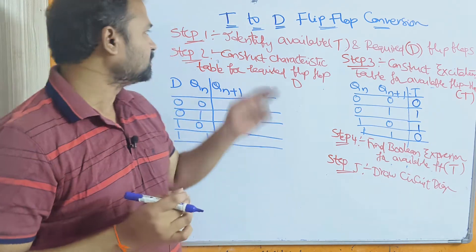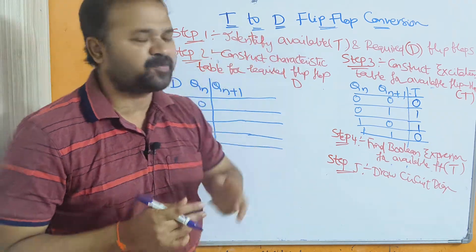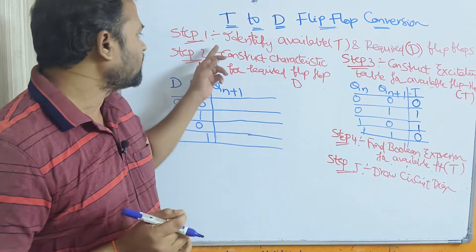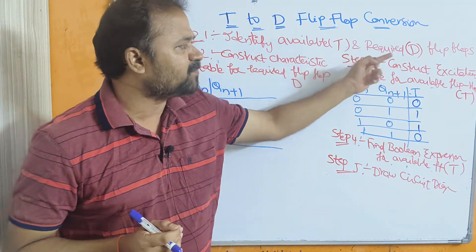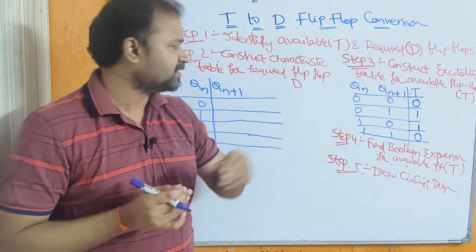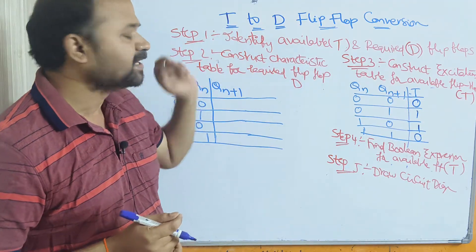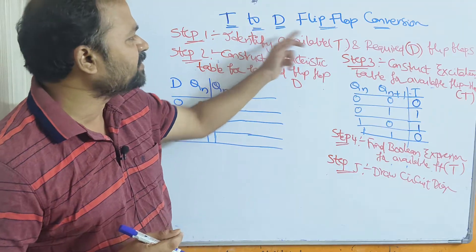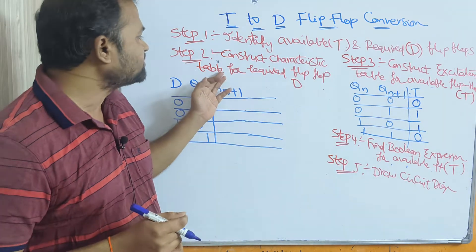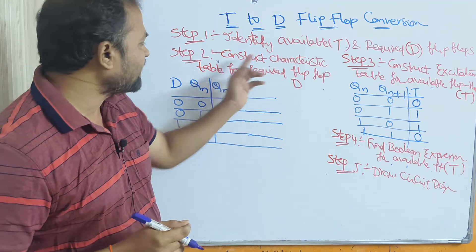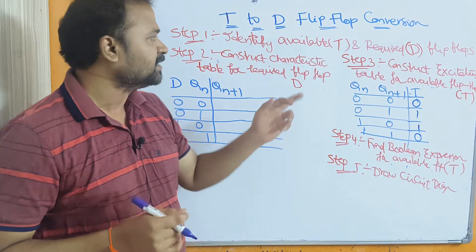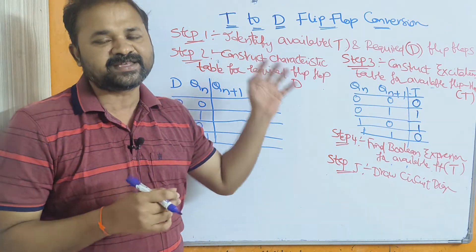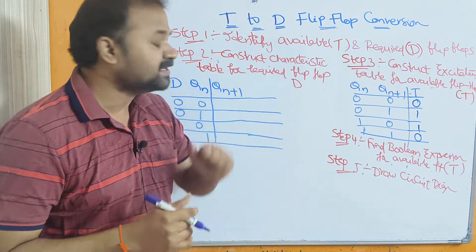Now let us discuss T to D flip-flop conversion. Here we have to follow 5 steps. Step 1 is to identify the available and the required flip-flops. The available flip-flop is the input flip-flop, that is the T flip-flop, whereas the required flip-flop is the D flip-flop. Step 2 is based upon the required flip-flop.